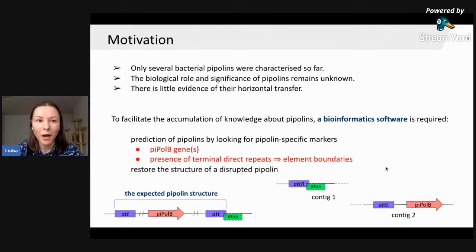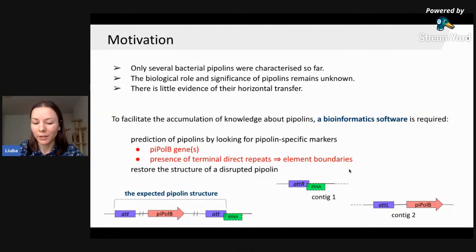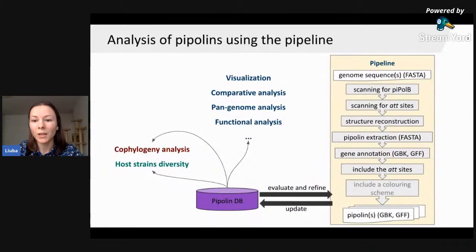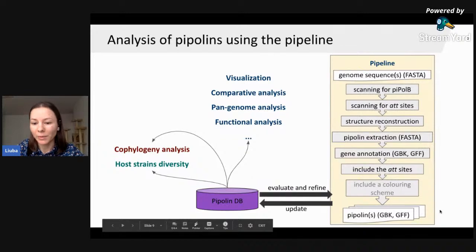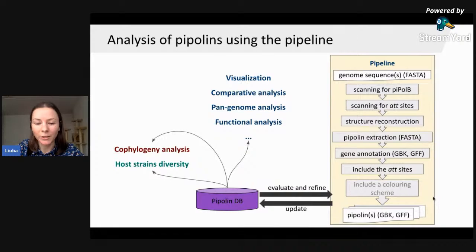Apart from this, we would like our pipeline to restore the structure of disrupted Pipolins — situations where Pipolin features are located on different contigs, which can happen when working with incomplete genome assemblies or metagenomic assemblies. Our software takes genome sequences in FASTA or multi-FASTA format as input, performs several analysis steps, and outputs Pipolin sequences and their annotations in commonly used formats.